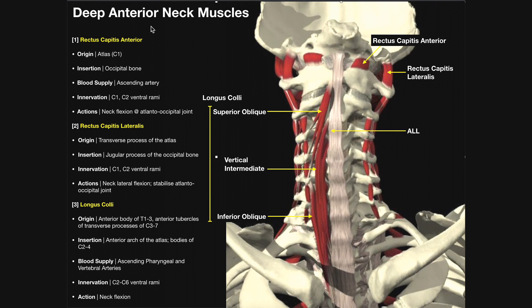In this video and the next couple of videos, we're going to be looking at the anterior neck musculature. This musculature is divided into four layers: the deep layer, the intermediate layer, the hyoid layer, and the superficial layer. In this video, we're going to look at both the deep layer and the intermediate layer.